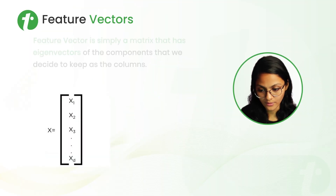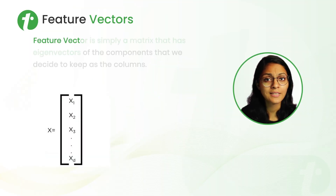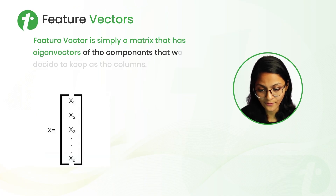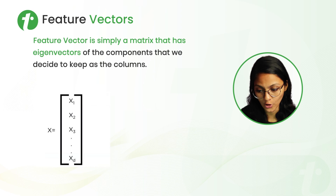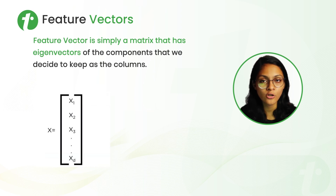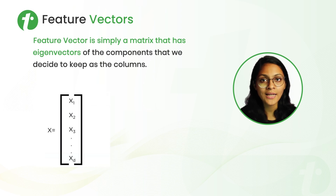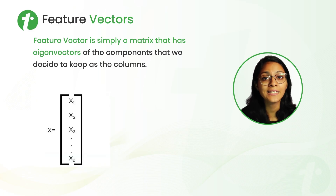The fourth step is the Feature Vector: a matrix containing the Eigen Vectors of the components we decide to keep as columns. In other words, the Feature Vector is a matrix of the Eigen Vectors of the selected attributes.